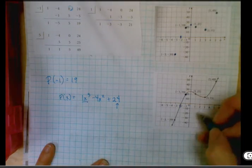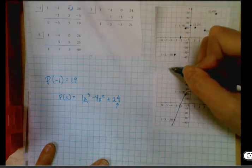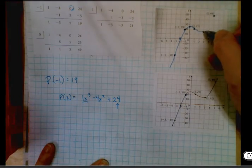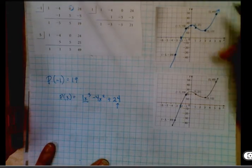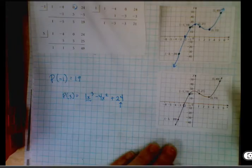Cubics, as long as they're positive, start low and end high. So it must come from below, and come around, pass through that, and go that way. So there's a graphing example for that one.